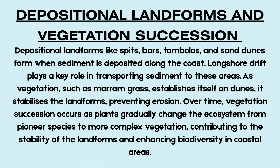Depositional Landforms and Vegetation Succession. Deposition occurs when waves lose energy and drop the sediment they are carrying. Over time, this forms beaches, spits, bars and tombolos. Beaches can be swash-aligned, shaped by constructive waves that approach the coast head-on, or drift-aligned, formed by longshore drift that moves material parallel to the coastline. Spits form where longshore drift continues past a change in the coastline's direction or across a river mouth. Spurn Head on the Holderness Coast is a classic example of a recurved spit. Where a spit grows across a bay and joins two headlands, a bar is formed, which can trap water to create a lagoon. A tombolo is a spit that connects the mainland to an offshore island, such as Chesil Beach linking to the Isle of Portland.